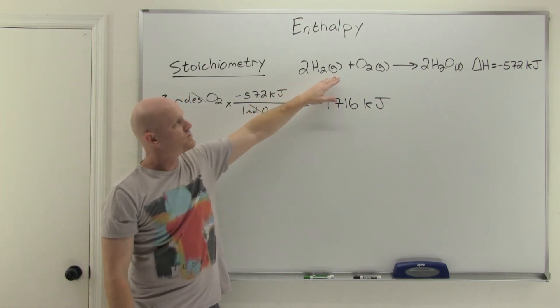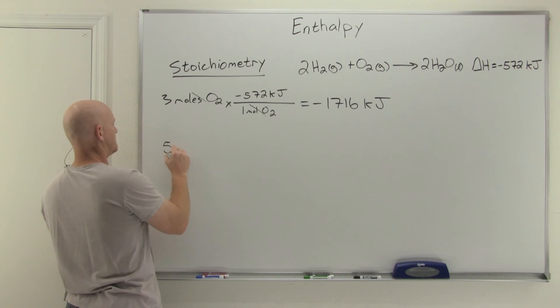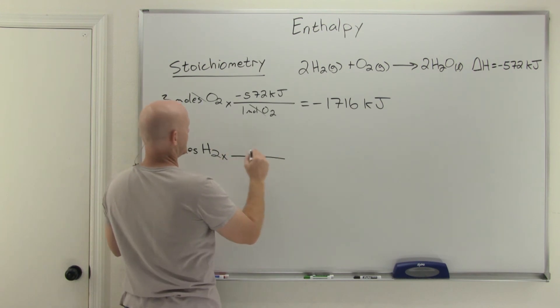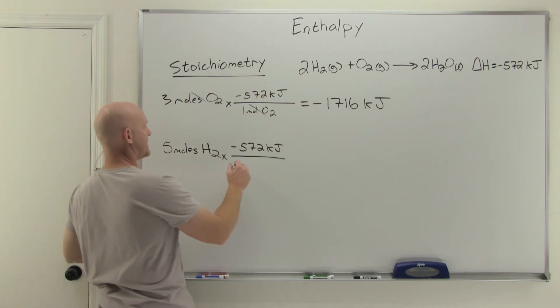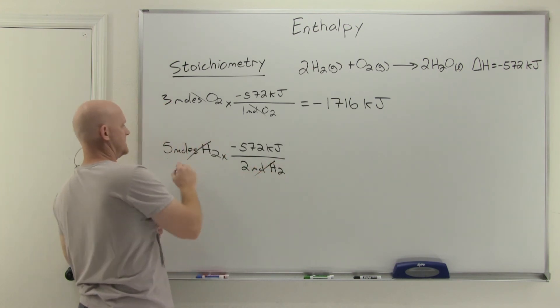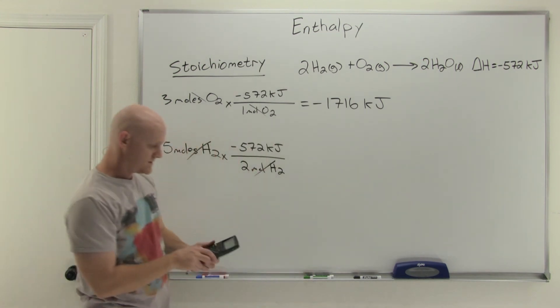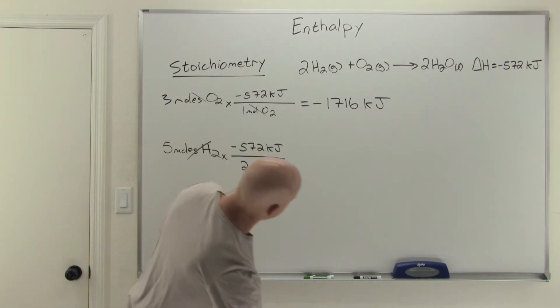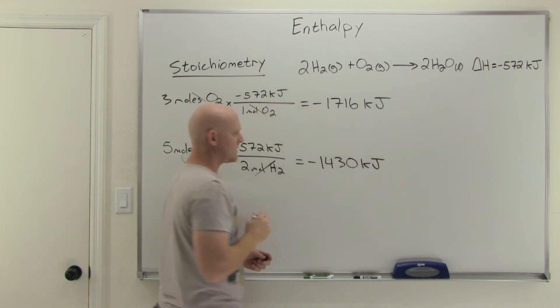We've got two more to go. We're still going to do two more questions involving this reaction. The next one says, what is the enthalpy change when five moles of H2 are consumed? In this case, my delta H is still negative 572 kilojoules, but that's not per one mole of H2. That's per two moles of H2 according to the balanced reaction. We'll multiply this across. The moles cancel and we get five times negative 572 over two. So five times negative 572 divided by two is negative 1430 kilojoules.